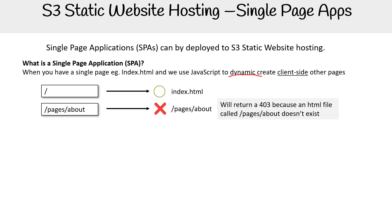Because it's going to expect S3 to have in it an HTML file that has a name of forward slash pages forward slash about — it's still an HTML file, even though it doesn't have the extension. The reason it doesn't have the extension is that if you want to have clean URLs without the extension, you can just name them without the extension and put them in there.